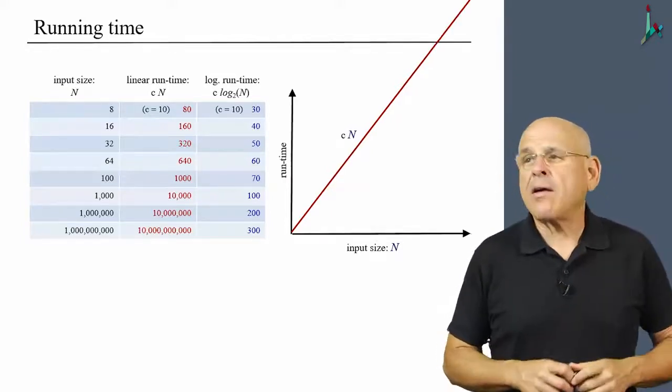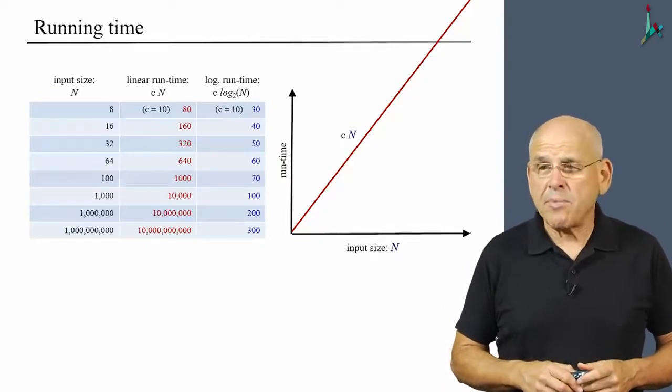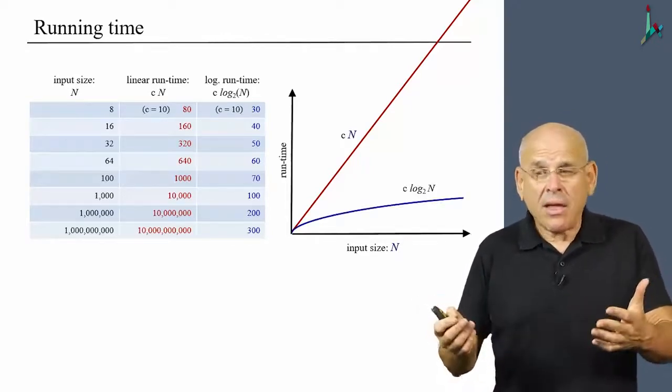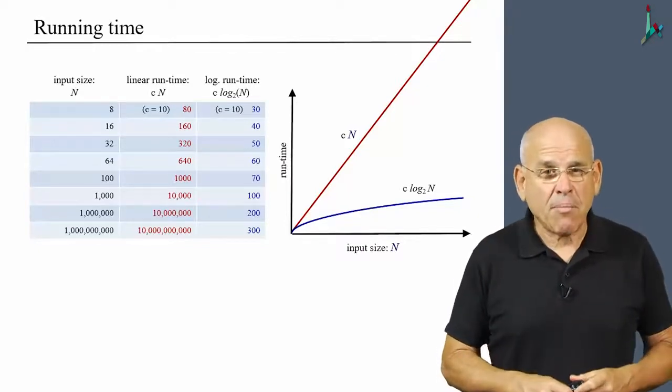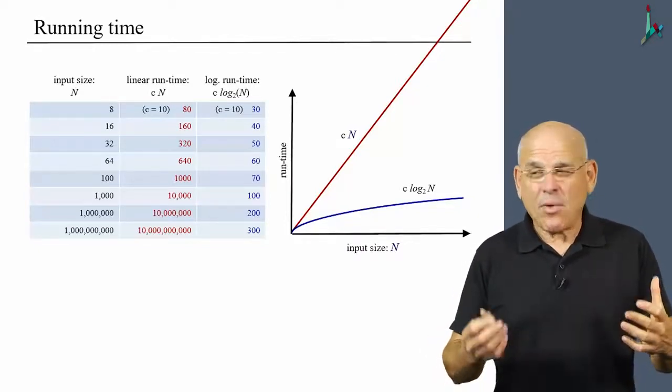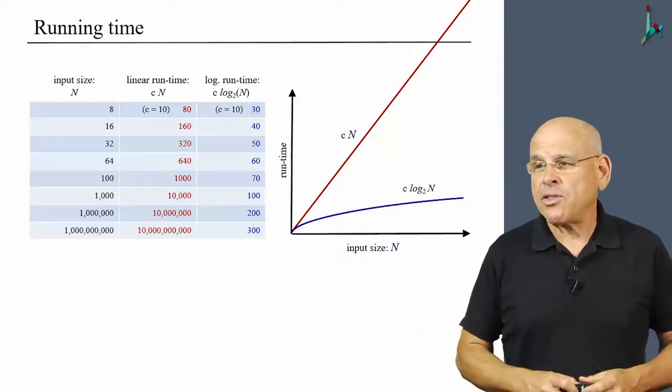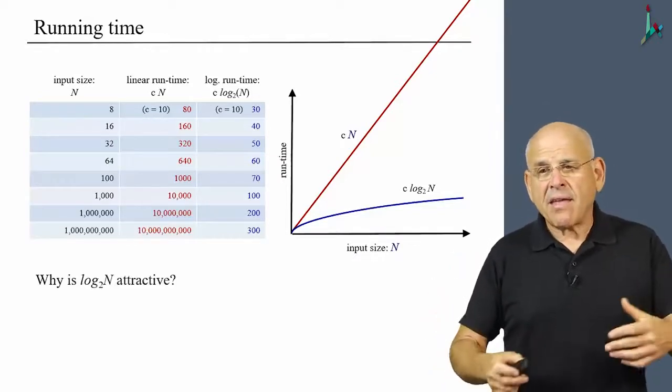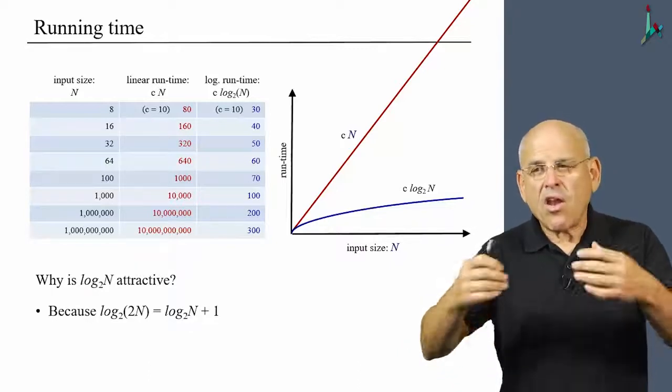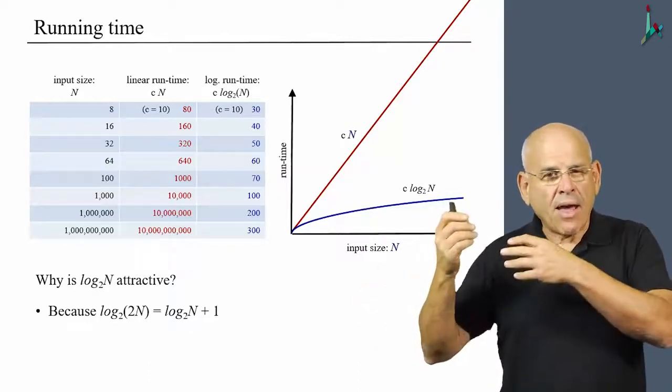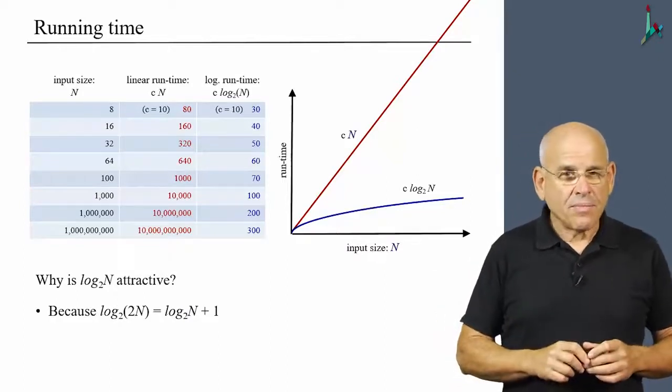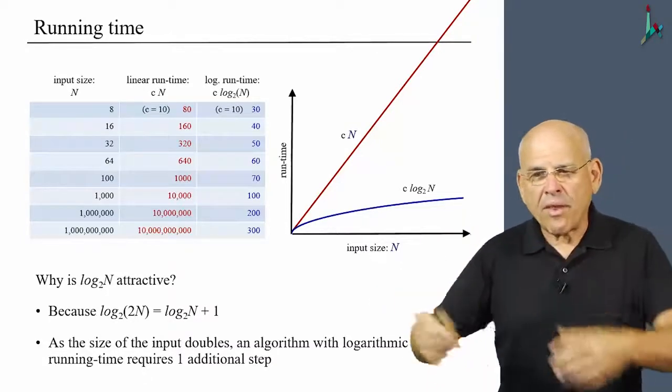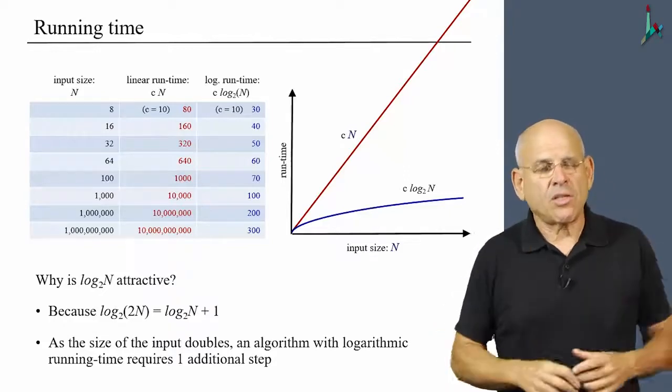And we can see the dramatic difference between these two functions very vividly if we plot them one next to the other. So on the x-axis we see the size of the input n. And here is the linear function, the red one. And you see that as n goes up, this function goes through the roof. And yet at the same time, the log remains asymptotically bounded. It will also reach infinity at some point, but it will take a lot of time. It will happen only with astronomically large input sizes. And so the attractive thing about log of n is that as you double the input, log of n increases by one unit only. And in words, as the size of the input doubles, the algorithm that has a logarithmic running time requires one additional iteration.